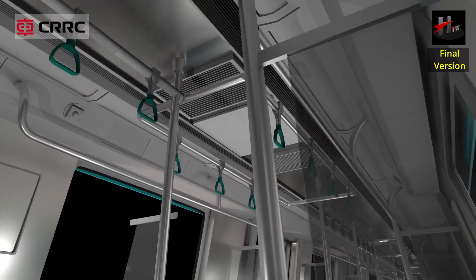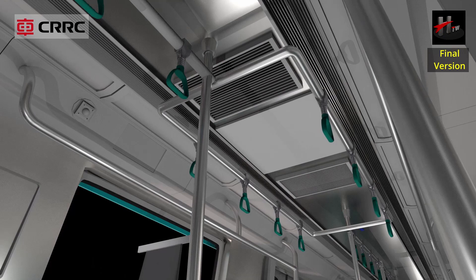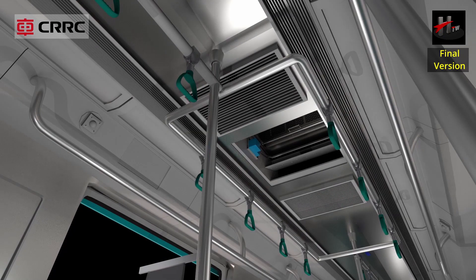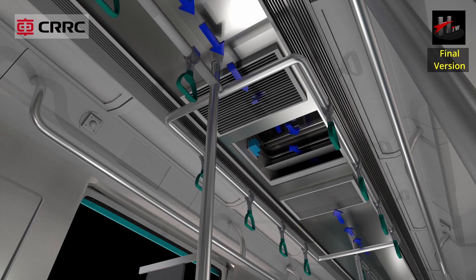The return air enters through the return air grill located in the ceiling of the passenger saloon. The return air damper wings are in open position so that the air can enter freely into the return air opening of the air conditioner.